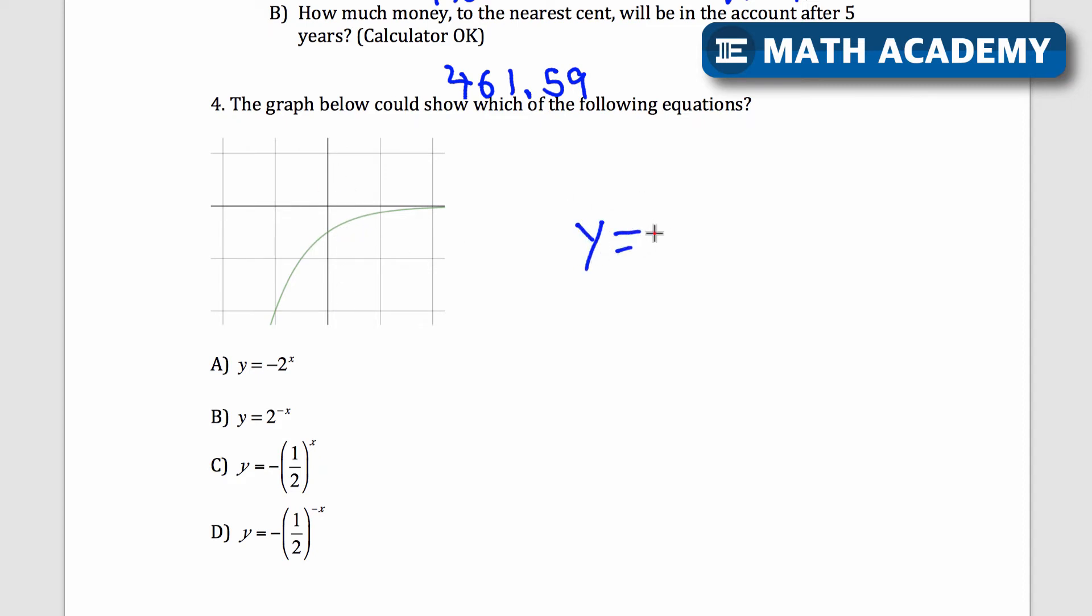If we have y equals 2 to the power of x, then that means that when we plug in 0 for x, I'm going to get my y-intercept first. If I plug in 0 for x, 2 to the 0 is 1. So I'd have the point 0, 1.